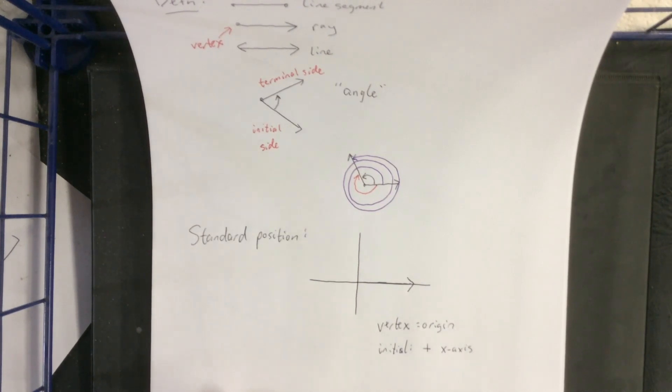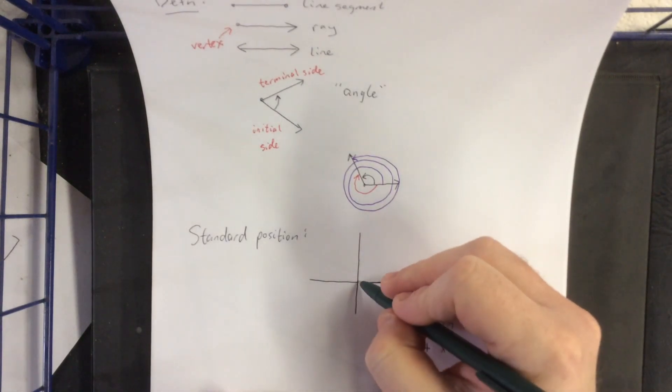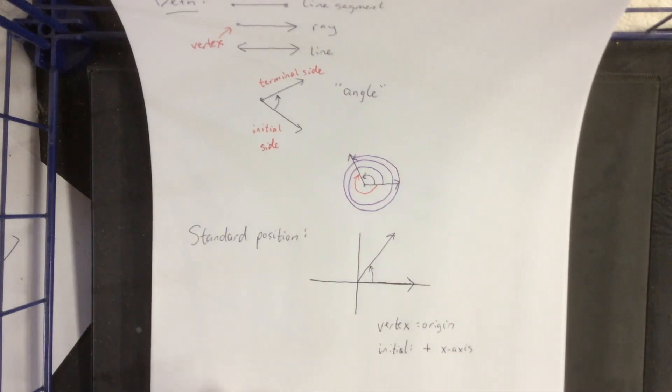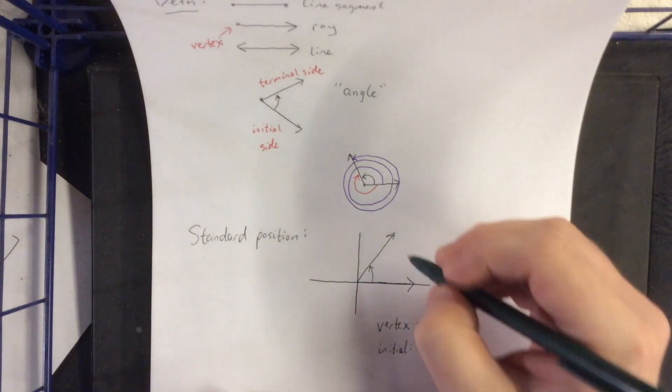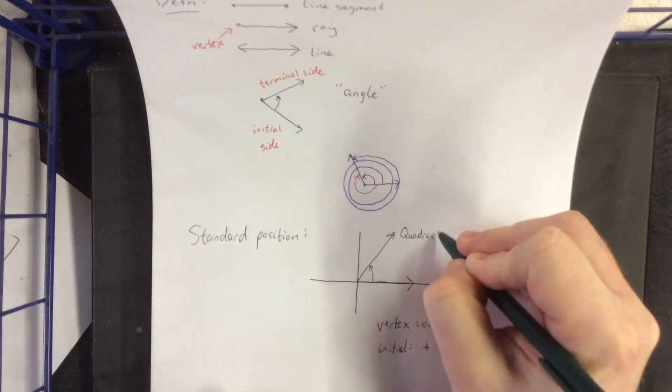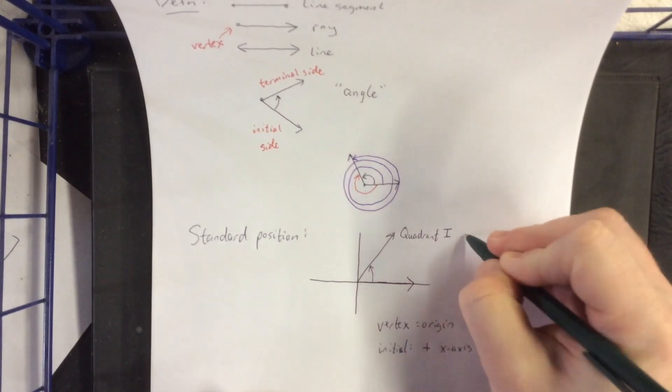Now, because it's so common to have things that are in standard position, what we'll typically do is just not even copy down what the initial side is. It'll just be assumed that that would be the initial side for something that is in standard position. Now, with that in mind, there are a couple different kinds of angles that we can talk about. This would be considered a quadrant 1 angle because its terminal side is located within quadrant 1.